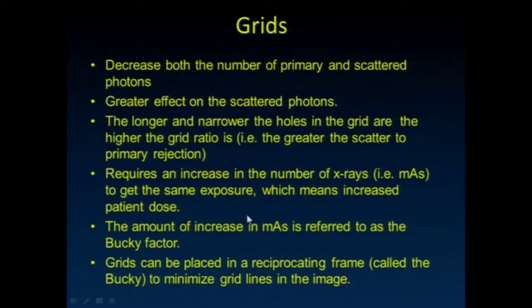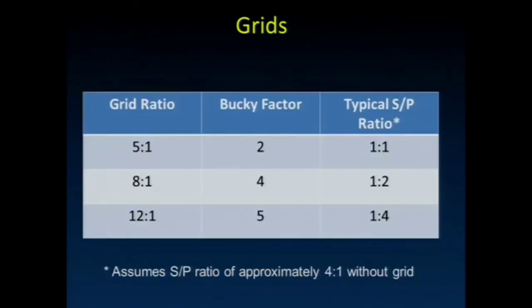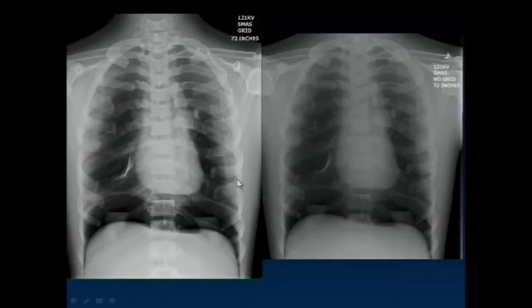We usually place the grids in a little bit of a reciprocating frame — they vibrate just a little bit, almost the diameter of the hole width, back and forth, so that you don't see the grid pattern on the radiograph. So here, for grid ratios of 5, 8, and 12, notice that the grid converts a 4 to 1 scatter to primary ratio to a 1 to 4 scatter to primary ratio. But the price paid is a need for a 5 times increase in dose to the patient. Here is a chest phantom done with the grid in place, and here's the same phantom done without the grid — everybody can see the reduction in contrast caused by all the additional scatter.